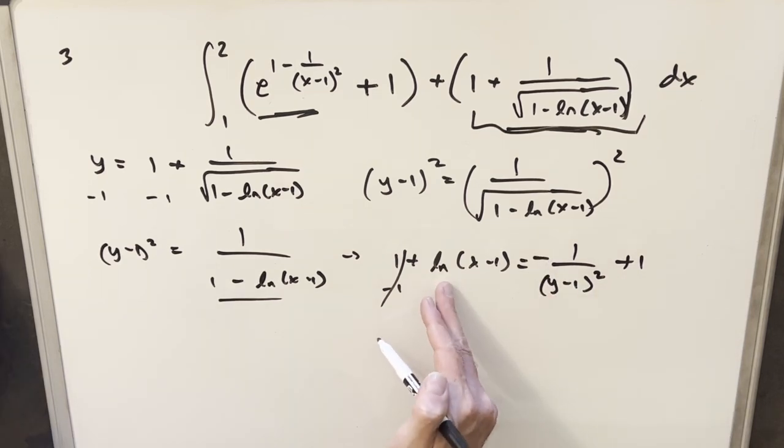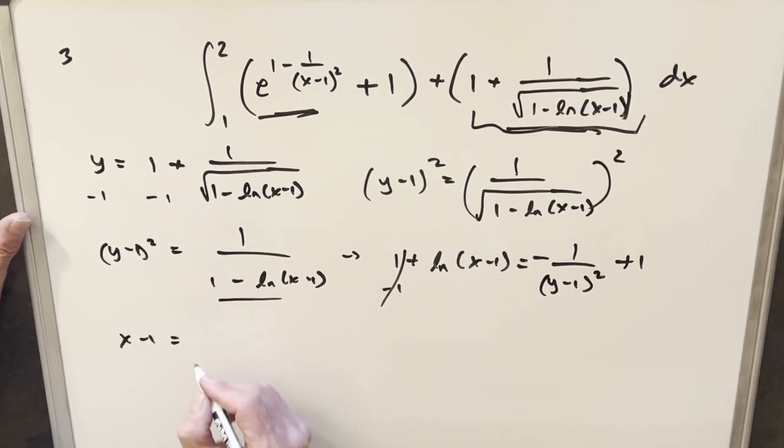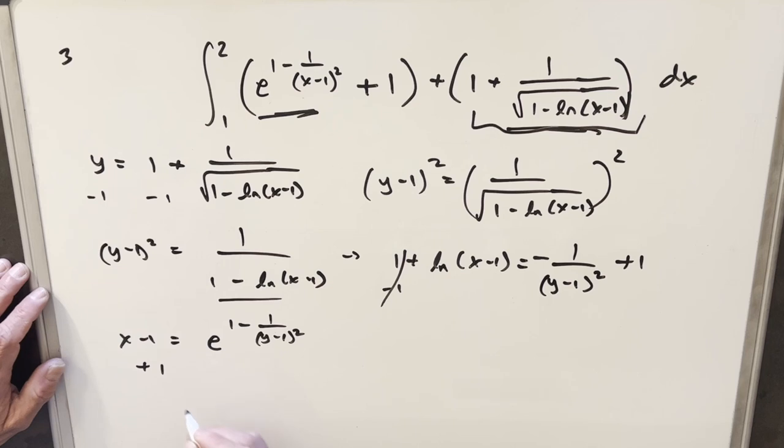And then I can use the property of logarithms to isolate my x minus one. So we end up with x minus one. And this is going to be raised to e. So I can write this as e to the one minus one over y minus one squared. But then I can just add a one on both sides.